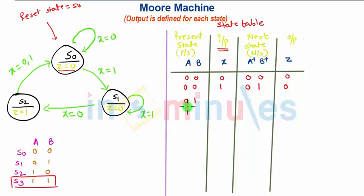So for state S1 that is 01, if X is equal to 0, it will go to S2. S2 corresponds to 1, 0 and output is 0. If X is equal to 1, it will remain in S1 state that is 0, 1 and output will be 0.